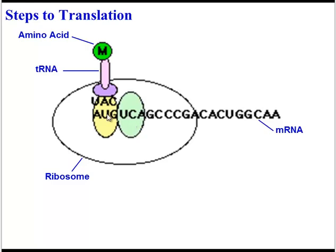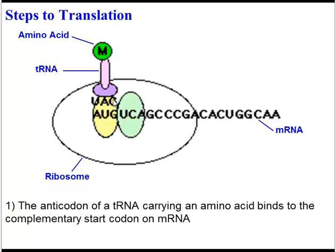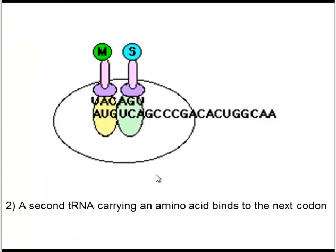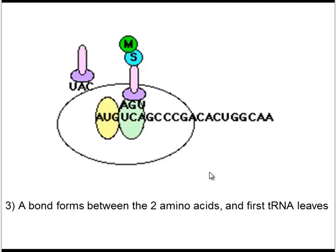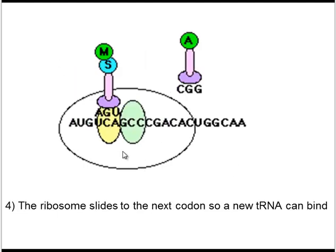Here's the process in action. Here we've got our ribosome, messenger RNA that came from the nucleus, the tRNA, and its amino acid. You can see the codons and one anticodon. The first step is that the anticodon of a tRNA carrying an amino acid binds to the complementary start codon on mRNA. Next, another tRNA comes along and binds to the next codon of mRNA. The amino acids then form a bond, and the first tRNA leaves — it's lost its amino acid and will head off to find another one. Then the ribosome slides along the mRNA to open up a spot for a new tRNA, and the process continues until all the codons are translated into a protein.